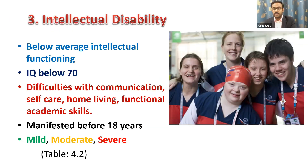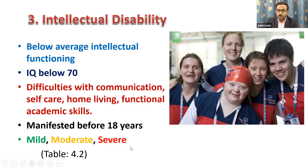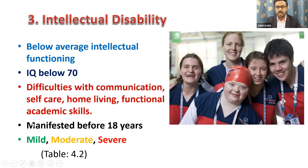Intellectual disability: below average intellectual functioning is present, with IQ below 70. There are difficulties in communication, learning, academics, self-care, and everything. There are cases that are mild, moderate, and severe. In severe cases, even life skills and daily routine tasks will be very difficult — they may need extra help for everything. It manifests before 18 years but continues even after that, and treatment is very difficult in these cases.